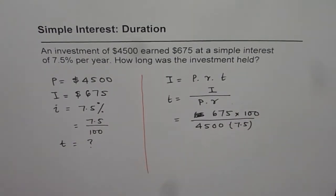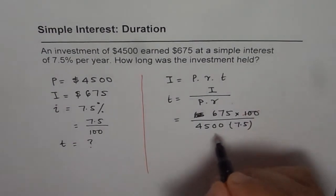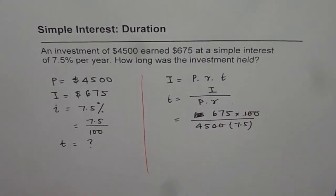That's the whole idea. Now we can simplify. These two zeros cancel out. We can use the calculator and find the answer. So, it is 675 divided by 45 divided by 7.5 is equal to 2.